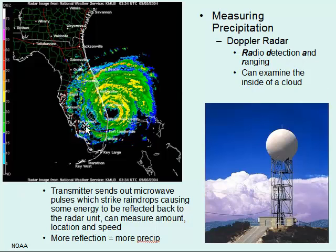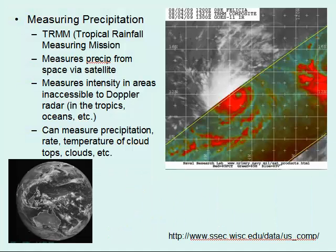These colors on the radar image show the amount of precipitation — blues are light and reds are very high. This image shows a hurricane hitting Florida. There are also methods of measuring precipitation from space using Doppler radar, but it's really helpful for places we can't reach with ground-based radar, such as areas out in the middle of the ocean where we don't have a land surface to mount a radar station, so we have to rely on satellites.